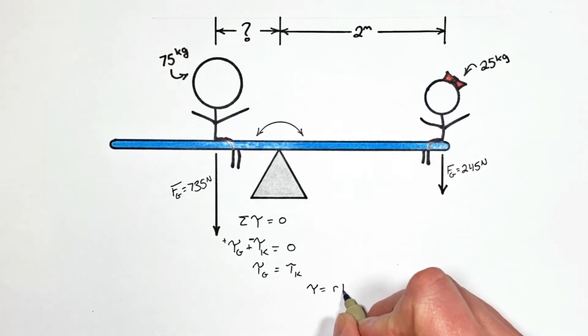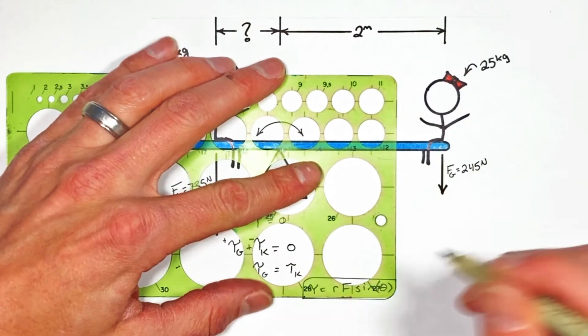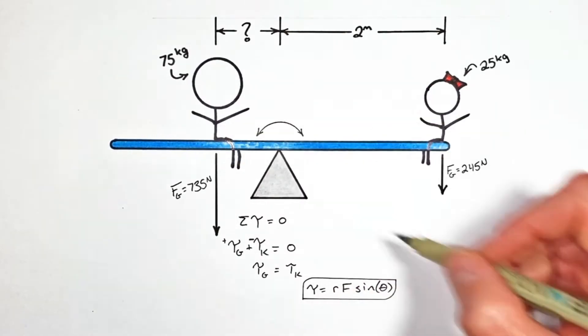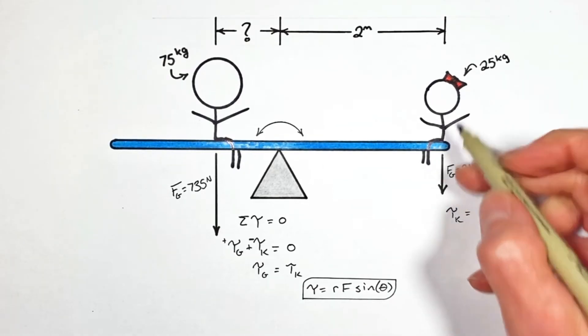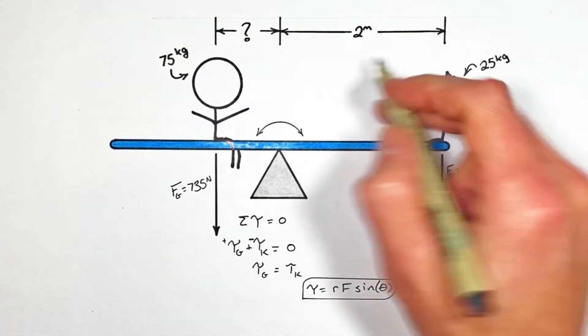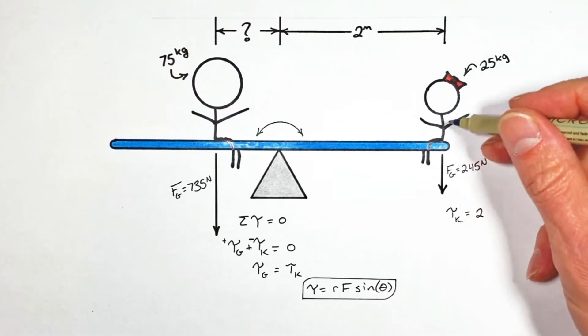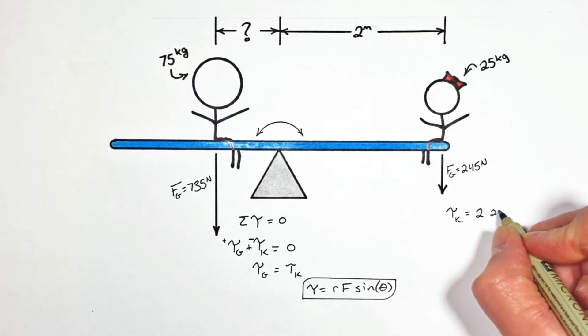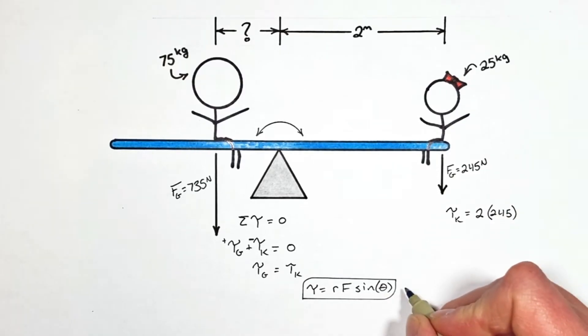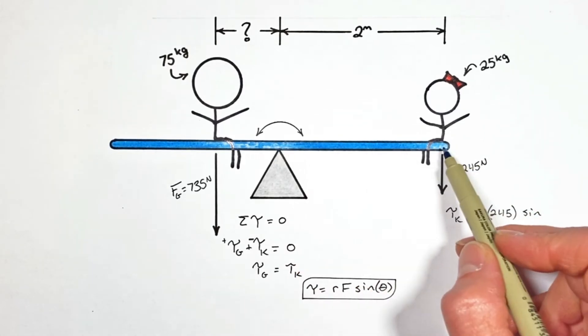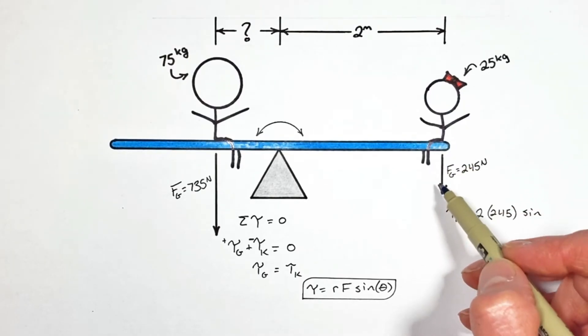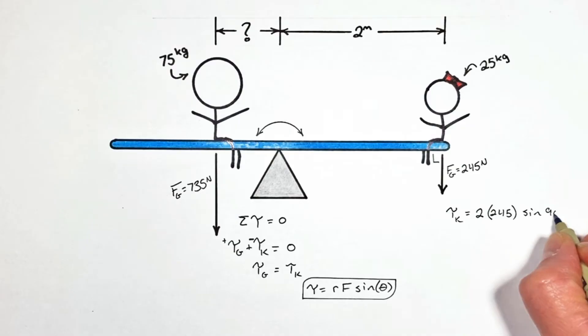Now, we know torque is given by the equation, radius times force, multiplied by the sine of the angle between the force and the radius. And all we're going to do here is apply this equation to each of these objects. So, starting with the kid over here, the torque by the kid on the beam is going to be equal to the radius, that is the distance between the kid and the pivot point, so that's 2 meters, multiplied by the force they're exerting on the beam, that's 245 newtons. And last, there's this sine theta. Now, the angle between the radius, that is, the vector that goes straight from this pivot point to the force, and the force, which is straight down, is ultimately 90 degrees, which means this sine term is going to work out to be 1.